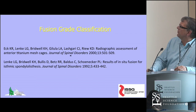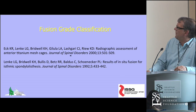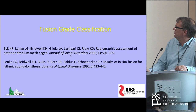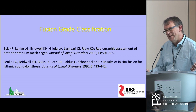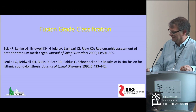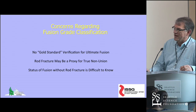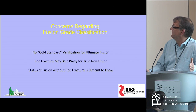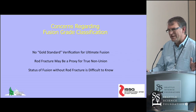A fusion grade classification was evaluated to see if it predicts rod fracture. Low fusion grade without rod fracture tends not to have much impact on clinical outcomes — similar to stratifying PJK versus PJF. There is no gold standard, and certainly no radiographic gold standard, for confirming full fusion. Rod fracture in most cases is a proxy for true nonunion, though not exclusively.